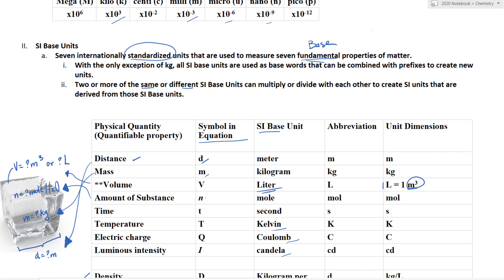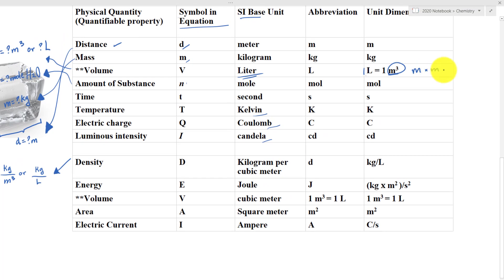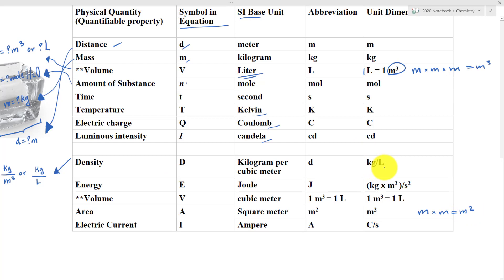For example, volume is meter times meter times meter — that is why we have meter cubed. Area is meter times meter, equal to meter squared. Density is kilograms over liter, or grams over milliliter. We will talk more about prefixes later.